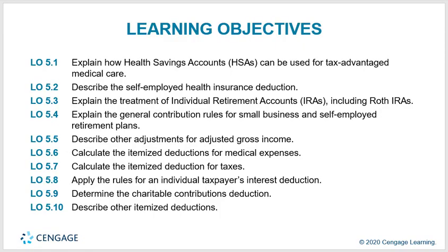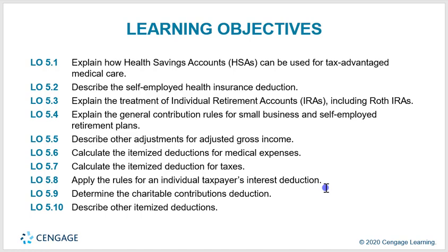In chapter five, we're going to cover health savings accounts, self-employed insurance deductions, IRAs, Roth IRAs, explain the general contribution rules for small business self-employed retirement plans, describe other adjustments for adjusted gross income, calculate itemized deductions for medical expenses, deductions for tax, apply the rules for individual taxpayers' interest deductions, determine charitable contribution deductions, and describe other itemized deductions.